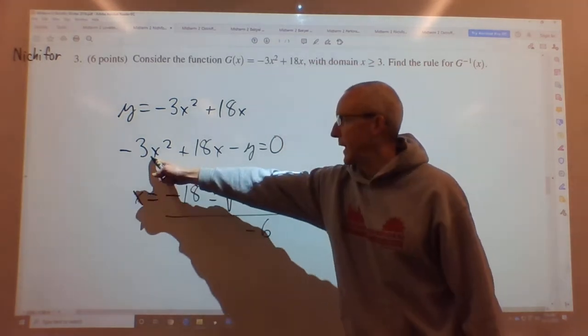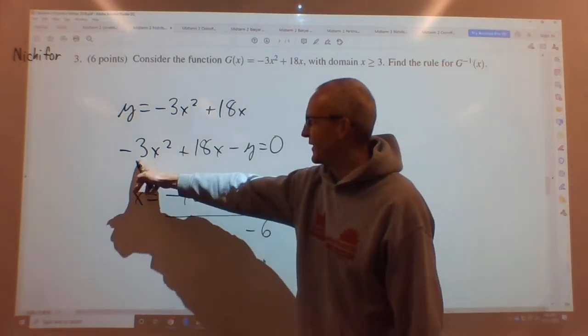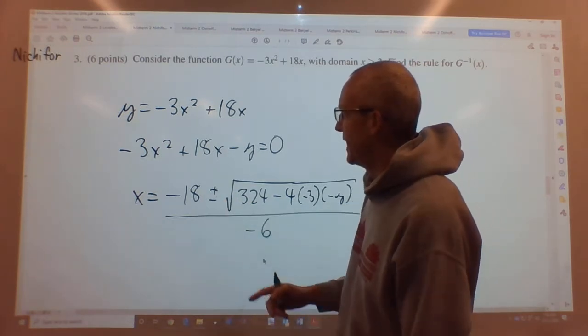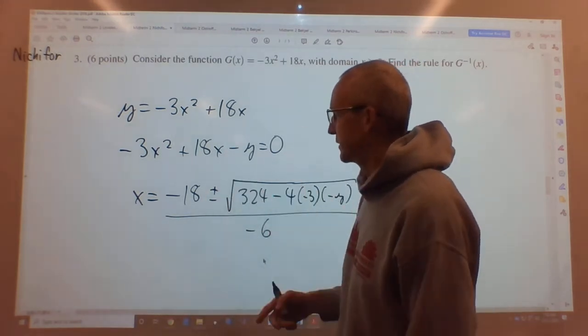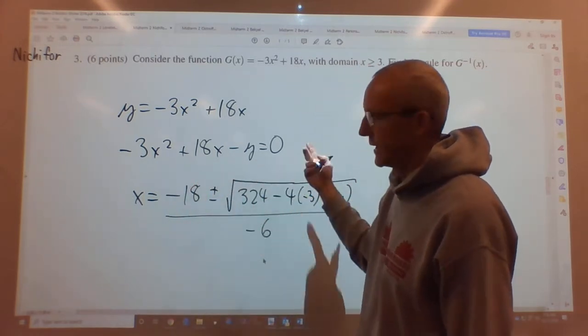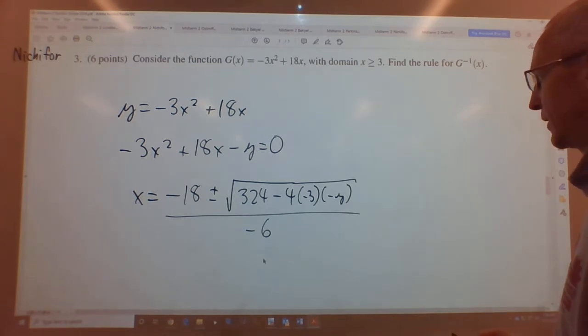I could have multiplied through with a negative right in the beginning, and that's always nice to not have a negative number for the a, because you get these negatives going on. I could have made this positive 3, negative 18, positive y. It would have been the same thing, but it doesn't matter. This works. So let's figure this out.